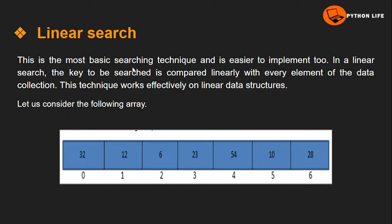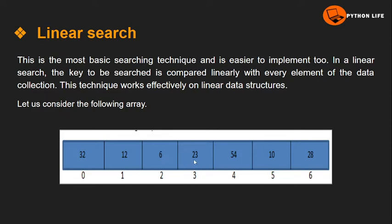Linear search uses sequential search — we check elements one by one until we find what we're looking for. For example, we look for element 23. If found, we return the position. The element is found at the third index. This is linear search.